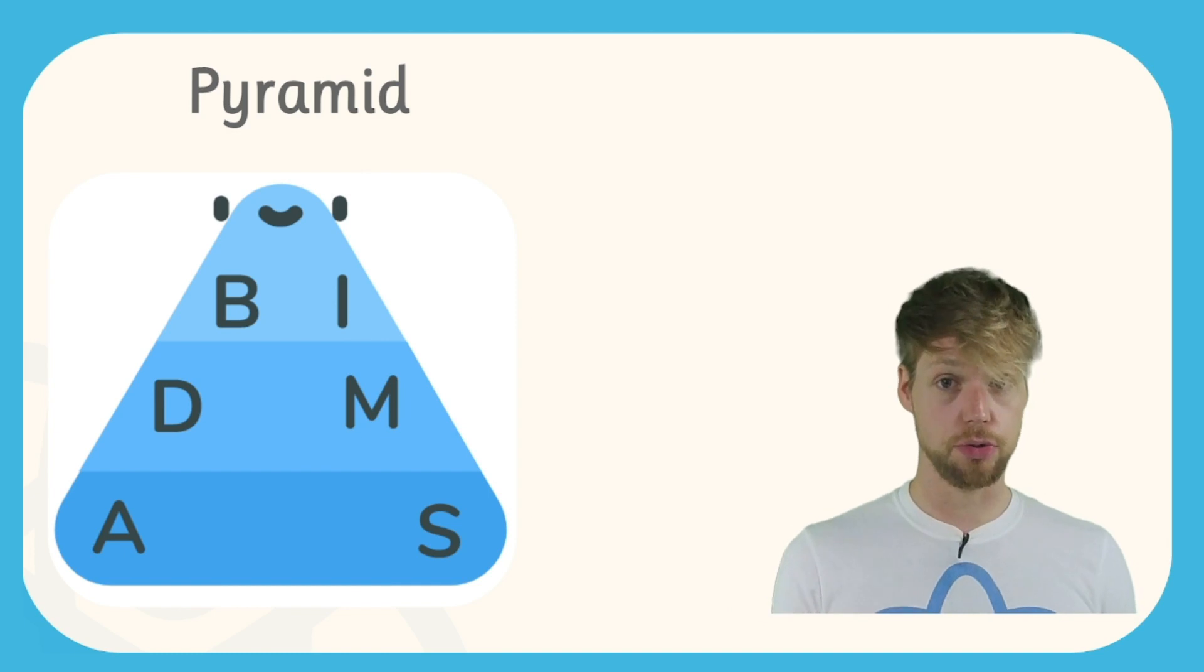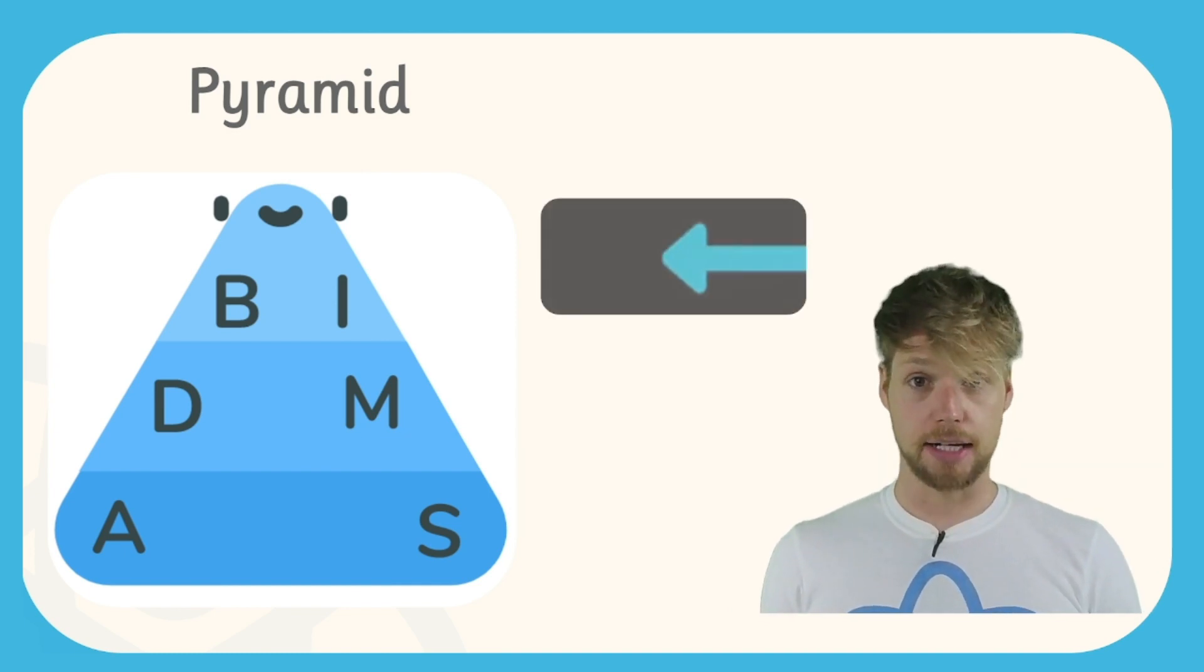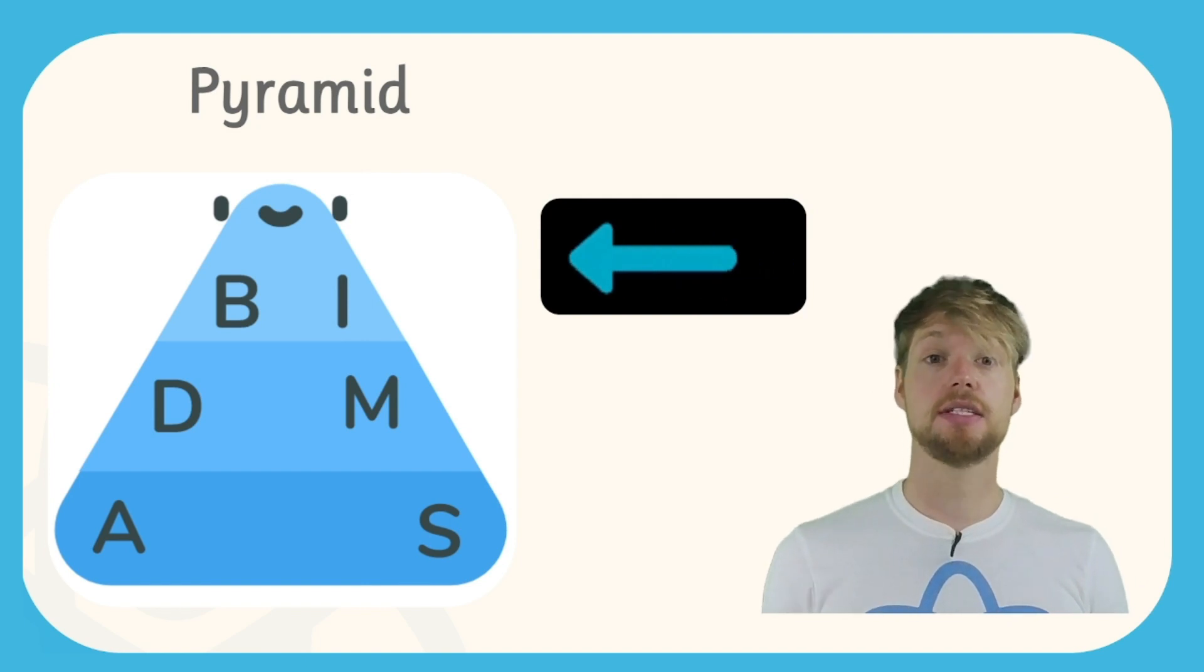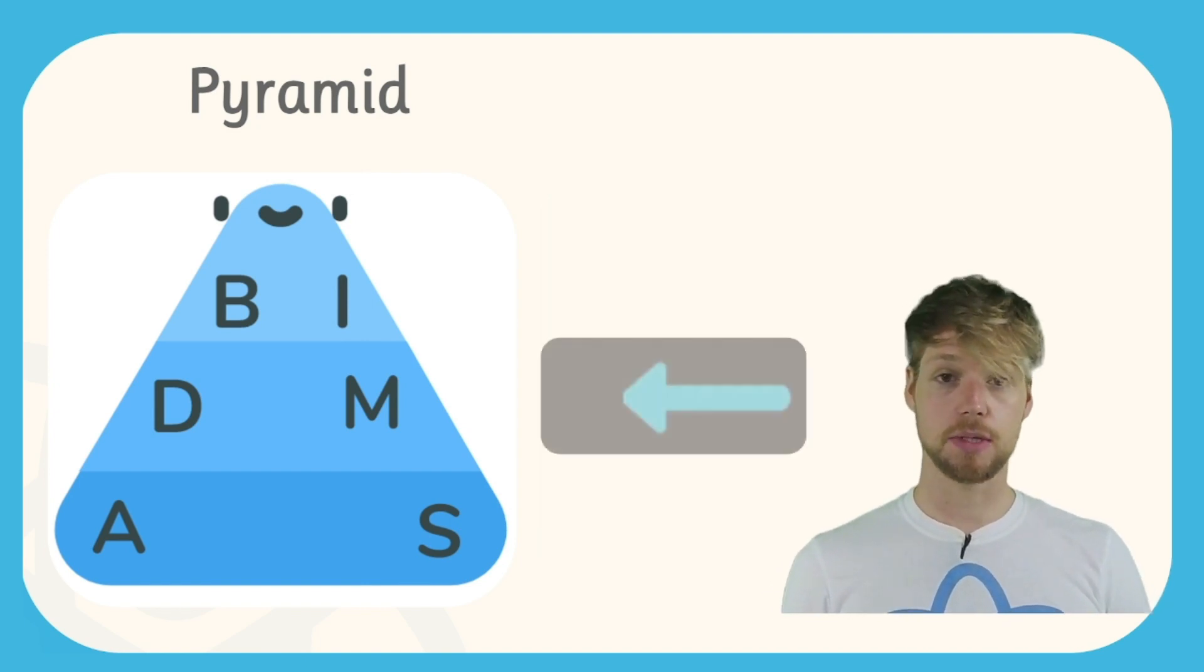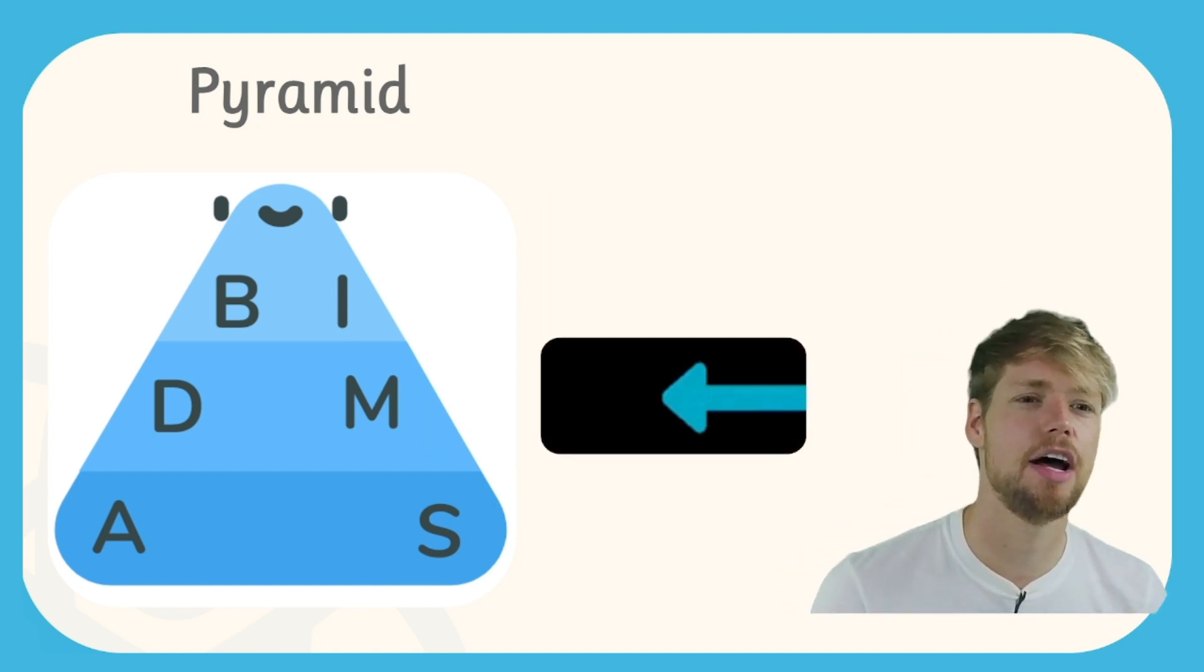This tiering system tells us the order in which we need to do the operations. First up we have brackets and indices, we always do those first. Then we have division and multiplication, and then coming in third is addition and subtraction at the bottom.